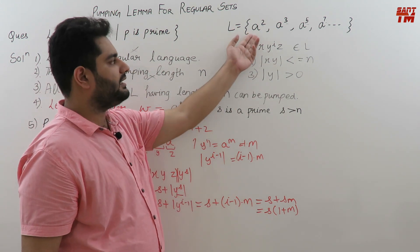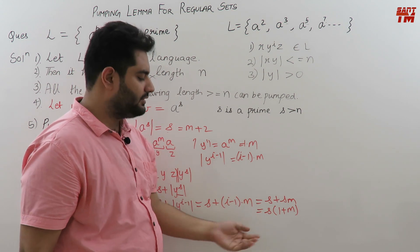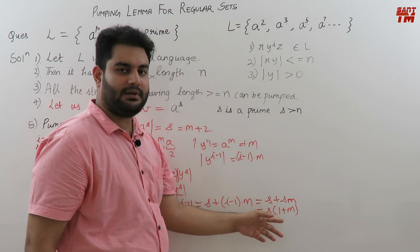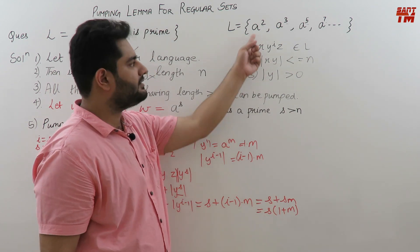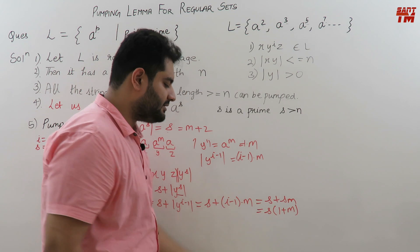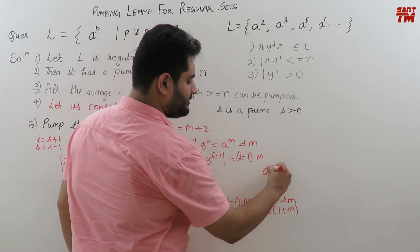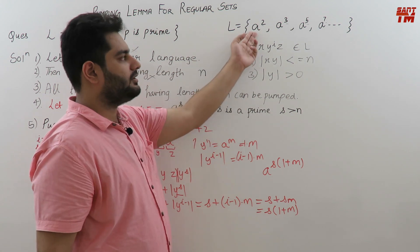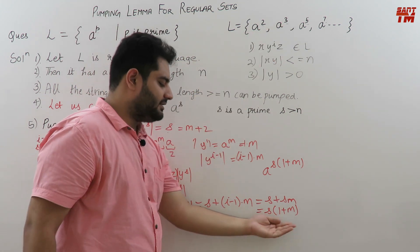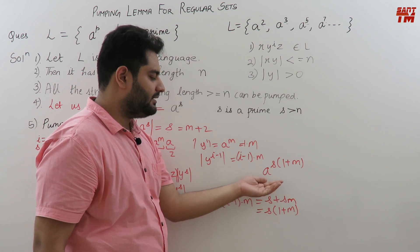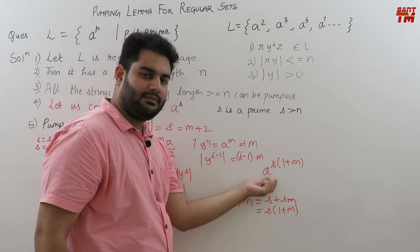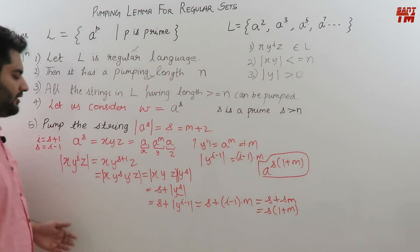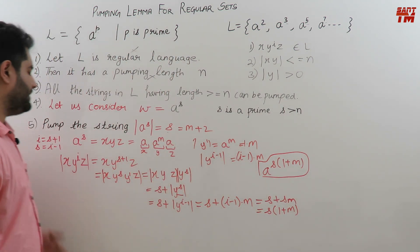The string after pumping is therefore a raised to the power S·(1 + M). This is our X·Y^i·Z after applying the pumping procedure with i = S + 1. Now, as per point number 6, we check whether the three conditions are all true at the same time.